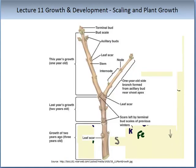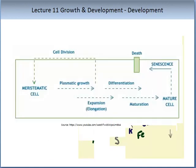Growth can be defined as an irreversible permanent increase in size. Here we have an illustration of the stages of growth of a bud, showing year one, year two, and year three growth. It is helpful to differentiate between growth and development. Growth is cell division and cell elongation, while development is the whole process — from germination through the different stages of growth to death, as illustrated on the slide.